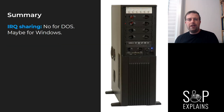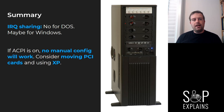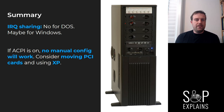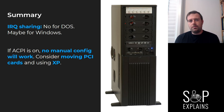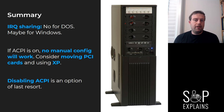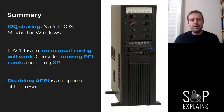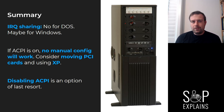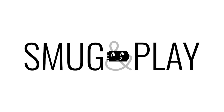In summary: you can't use IRQ sharing in DOS. Sometimes you can in Windows, but it may lead to problems. If ACPI is on, no manual configuration is going to work — try moving PCI cards, and consider using Windows XP if the games you want to play support it, because Windows XP gives you 24 IRQs to work with. If none of those things work, you can disable ACPI — this often works well in combination with disabling serial and parallel ports, then you can move cards to IRQs 3 to 5 and 7. Thank you for watching — please like the video and subscribe for more Smug and Play content.